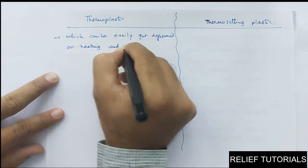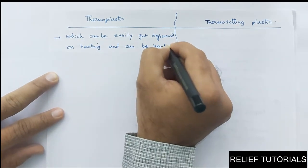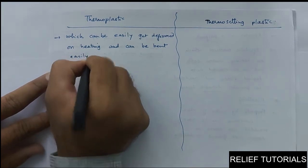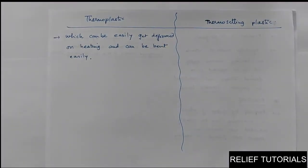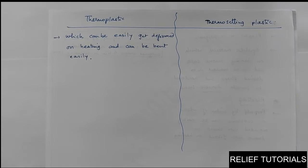Thermoplastics can be bent easily. For example, if you have a plastic item and you heat it, that plastic again becomes soft — deformed means it becomes soft — and again you can mold it into another shape, meaning another item can be produced. Such plastics which easily get deformed and become soft on heating are called thermoplastics.